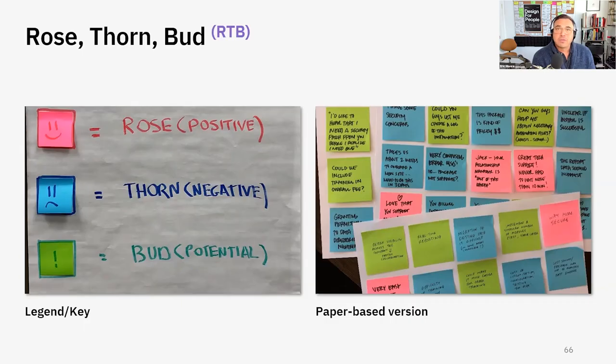A rose represents all the things that are positive — things that are working in, say, a product or an application. What's working? What's going well? What are some things that make you feel good about what you're observing?